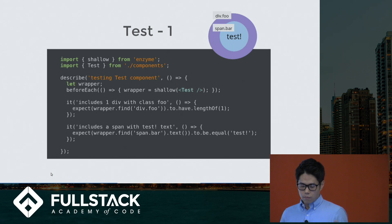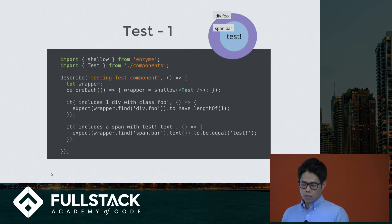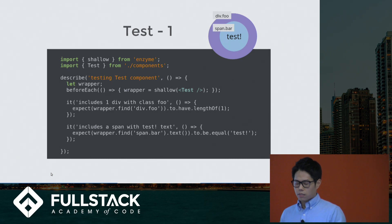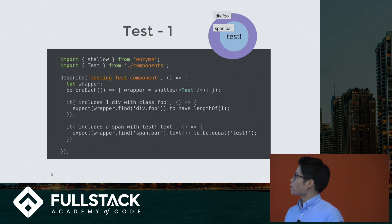The second test is very similar. It finds the span.bar element inside the wrapper and expects its text to be equal to 'test'. And it does, so this should pass too.